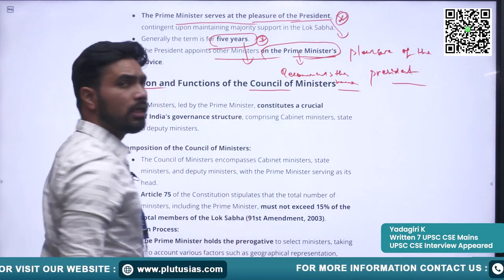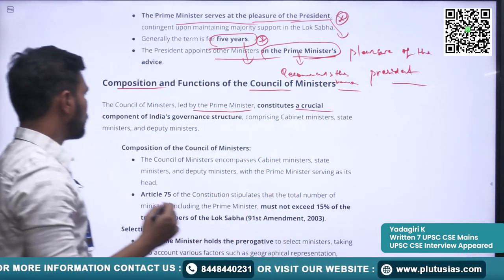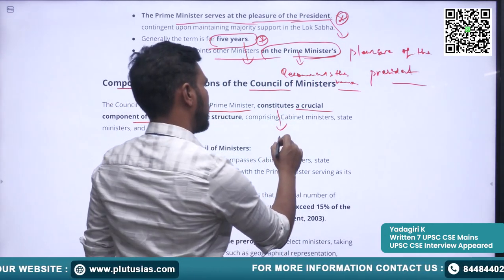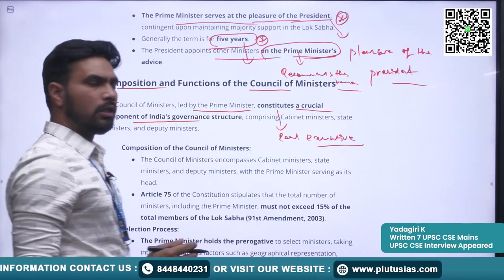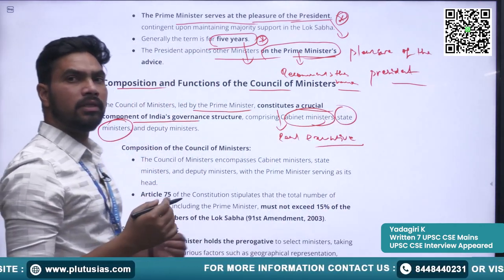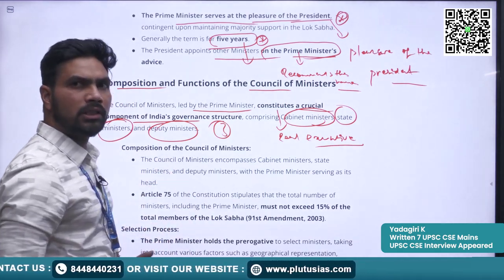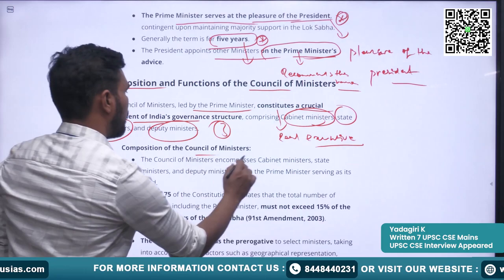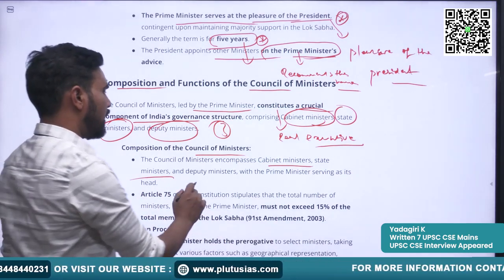Now we will see the composition and functions of the Council of Ministers. The Council of Ministers is led by the Prime Minister and constitutes a critical component of India's governance structure. It wields the real executive power. The Council of Ministers comprises Cabinet Ministers, Ministers of State, and Deputy Ministers — three kinds of ministers. The Prime Minister serves as the head of the Council of Ministers.